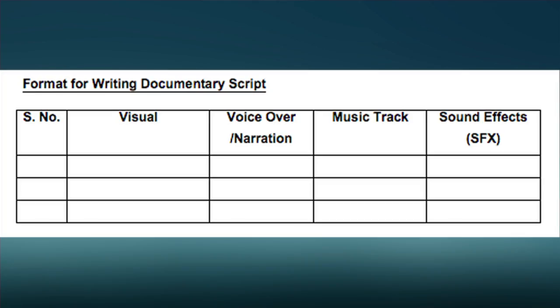Format for writing a documentary script includes: serial number, visual, voiceover/narration, music track, and sound effects (SFX). Prepare a budget for the documentary required for shooting and editing the film. Make a list of resources including time, equipment, talent, sources, etc., required for making the film.